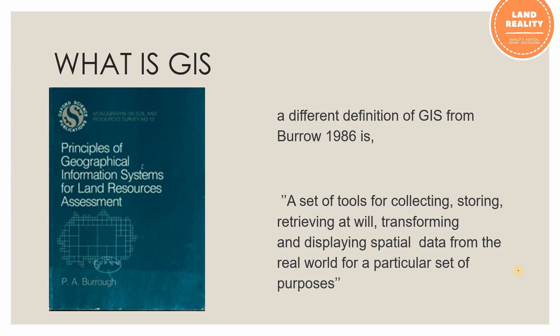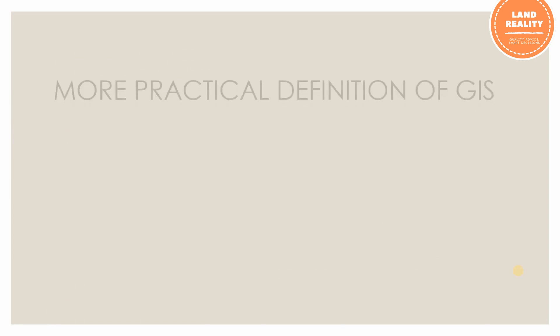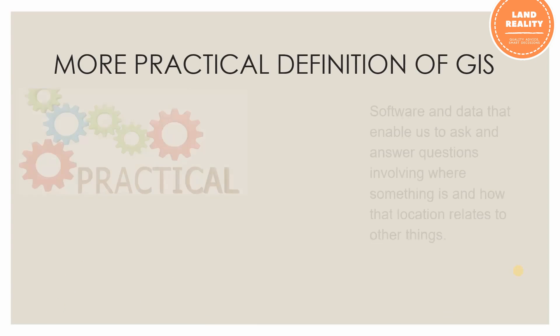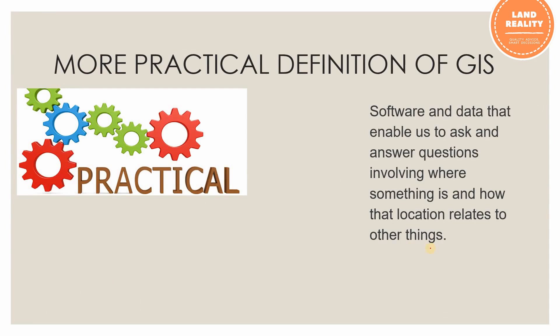This definition is broader compared to the ESRI definition of GIS. So let's look at a more practical definition of what GIS is. A more practical definition: it's a software and data that enables us to ask and answer questions involving where something is and how that location relates to other things. This deals with where something is and the relationship of that location to other things.